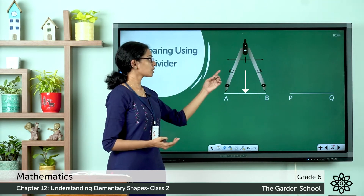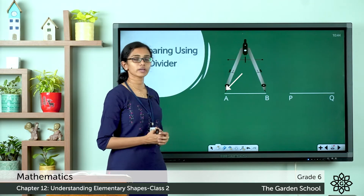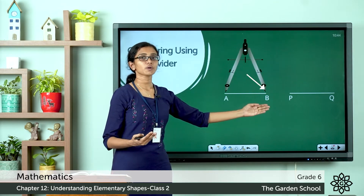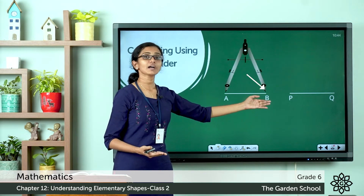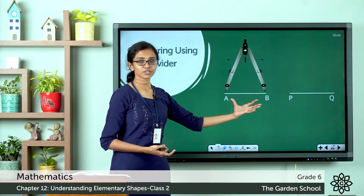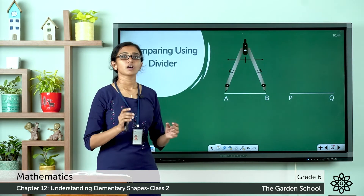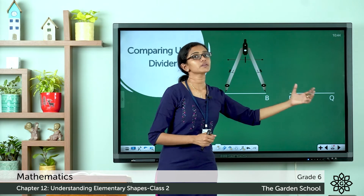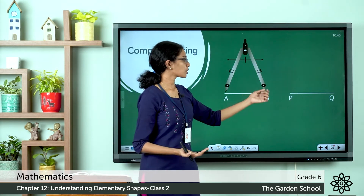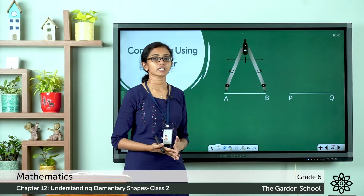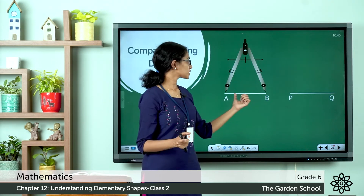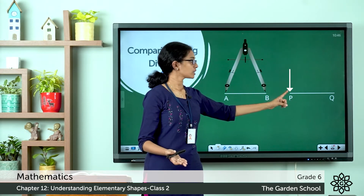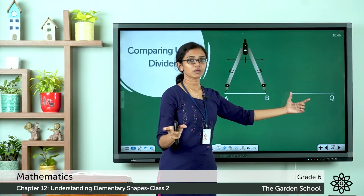Place the point of one arm of the divider coinciding with point A. Then open the arms and stretch until the point of the other arm coincides with the other end point of the line segment. Now you have a measure of line segment AB on the divider. Without disturbing the opening of the divider, place it over the other line segment PQ so that one arm coincides with one end point. Now you have the measure of line segment AB ready for comparison.